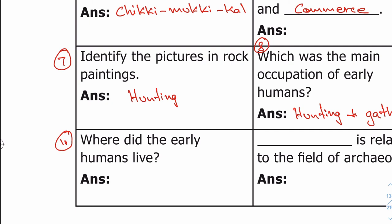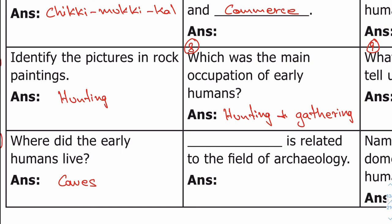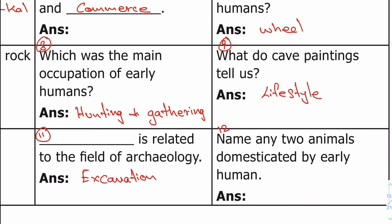Tenth question: where did the early humans live — caves. Eleventh question: dash is related to the field of archaeology — excavation. Twelfth question: name any two animals domesticated by early humans — dog and oxen.